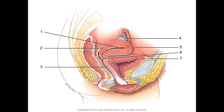The uterus itself is a pear-shaped organ. It lies posteriorly and superiorly to the urinary bladder and is anterior to the rectum. The uterus has three main regions: the fundus — the top part — then the body, which is most of the uterus, and then the cervix down below. The body starts inferior to the openings of the fallopian tubes.